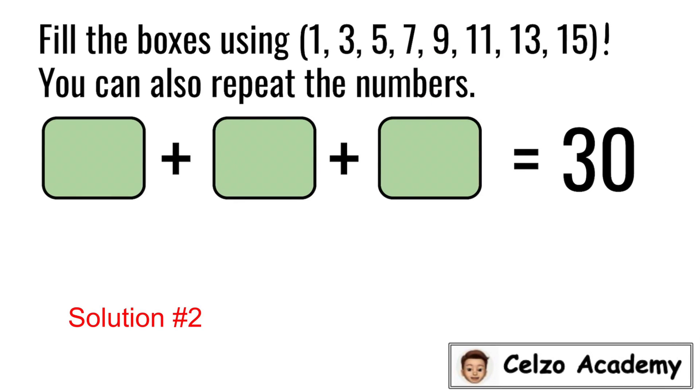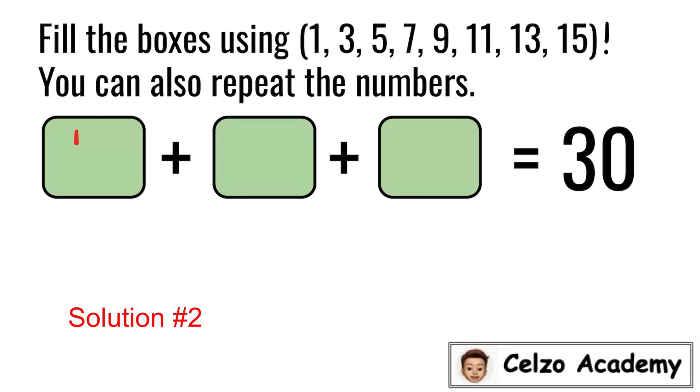Here's our solution number 2. For the first box, I will write the number 15. For the second box, I will write the number 9. 15 plus 9 is 24. So we need to get a 6 to get a 30. Just like solution number 1, I will use the 9 but write it as an inverted number 6. The problem says you can also repeat the numbers. So I used the number 9 twice and I rotated one of them to form a 6. So 15 plus 9 plus 6 is also equal to 30. You may also rearrange the numbers 15, 9, and 6 to get a 30.